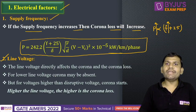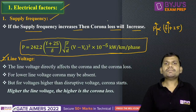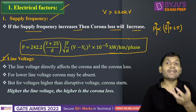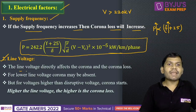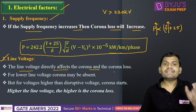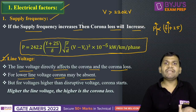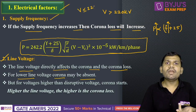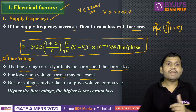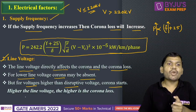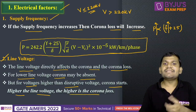One more factor is line voltage. For voltage greater than 220 kV only, we can consider the corona effect. The line voltage directly affects the corona loss. For lower line voltages — for V less than 220 kV — we can neglect the corona loss. But for voltage higher than the critical disruptive voltage, corona starts. Higher the line voltage, higher is the corona loss.